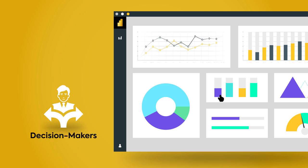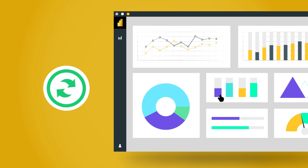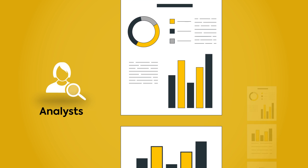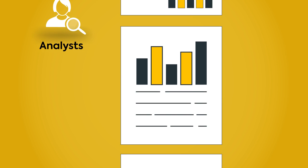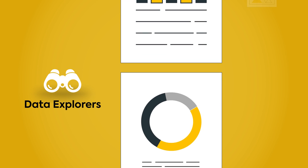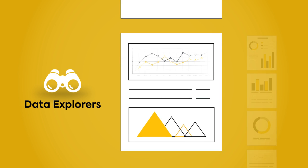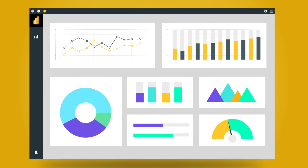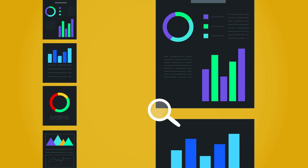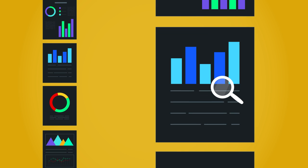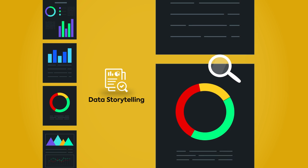Dashboards are ideal for decision-makers needing fast updates, whereas reports are designed for analysts and data explorers who require a more granular view. In dashboards, you'll find key metrics displayed on titles. Reports, however, provide a wide range of detailed visuals, catering to in-depth data storytelling.